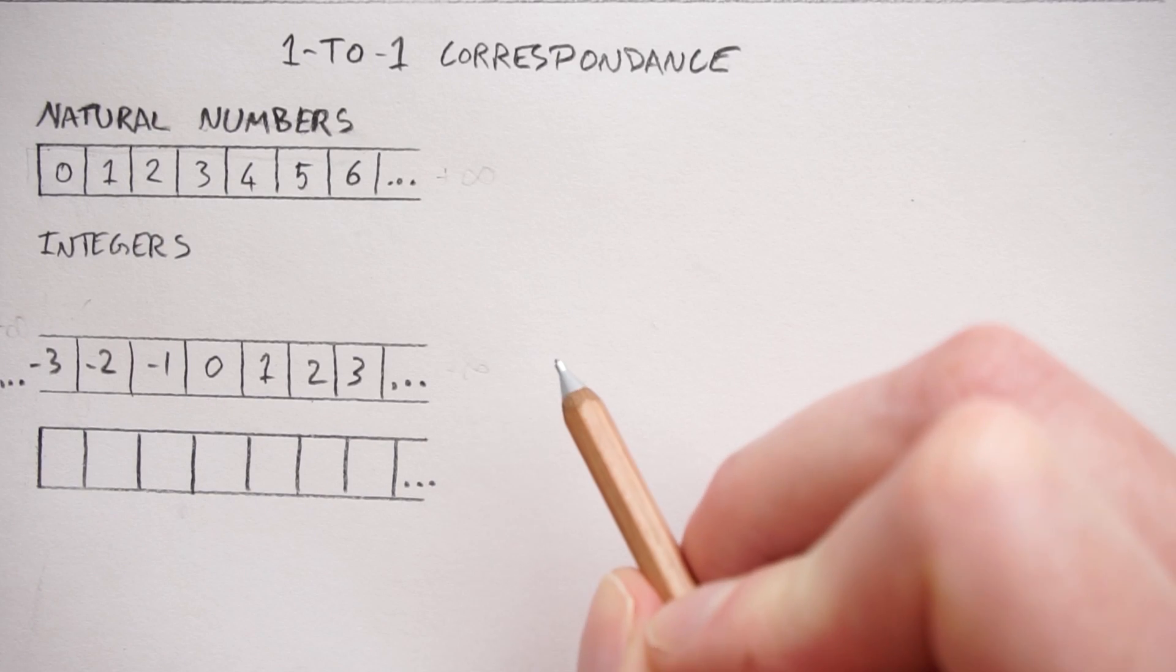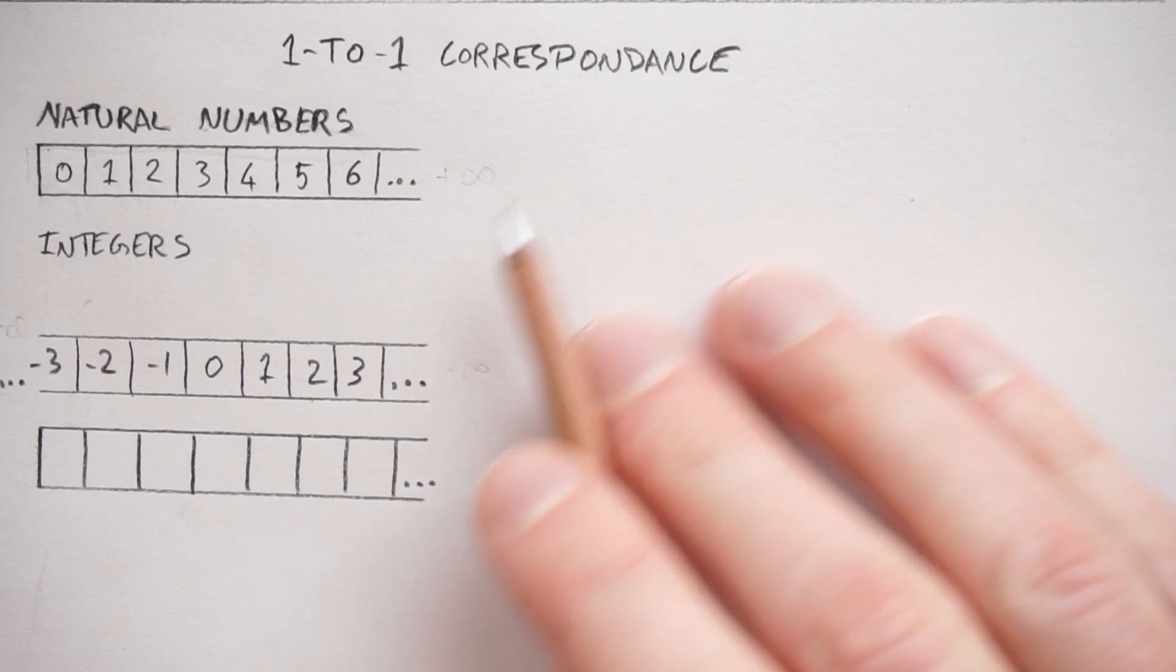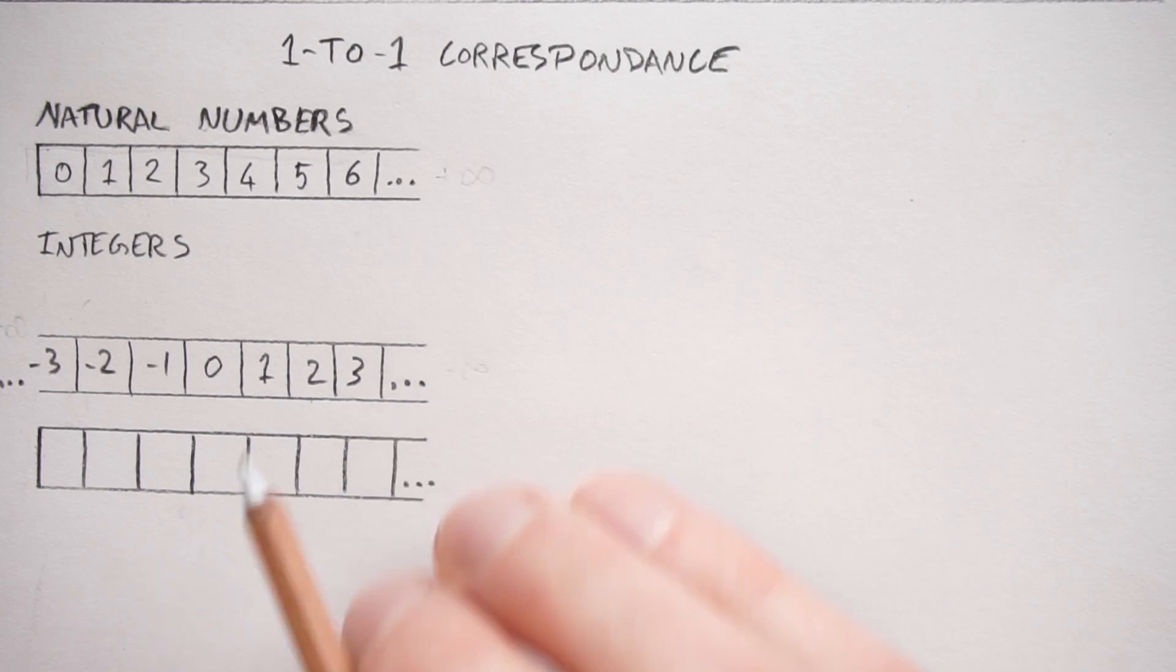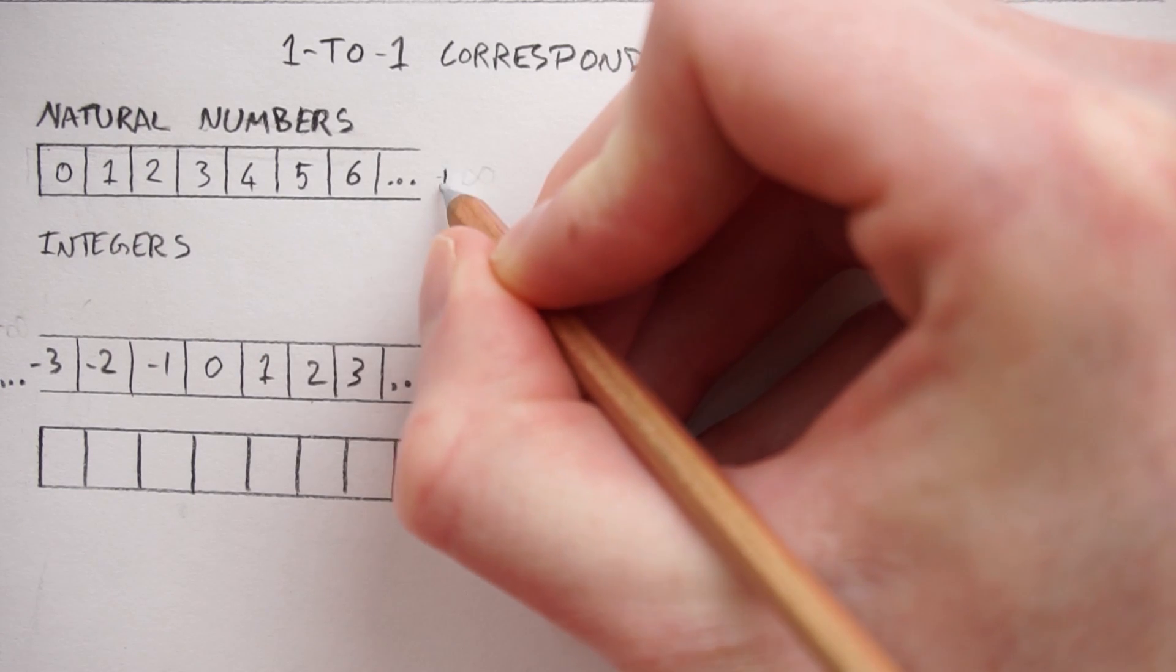So this is a method developed by George Cantor, the inventor of set theory. OK, let's do that. OK, this is the argument that George Cantor used to show which infinities are the same and which are different. So we're first going to look at two sets of numbers. First the natural numbers, which just go from zero up to positive infinity.